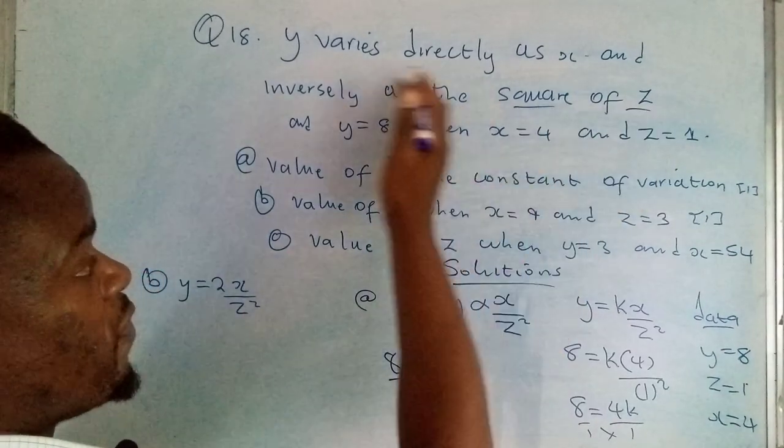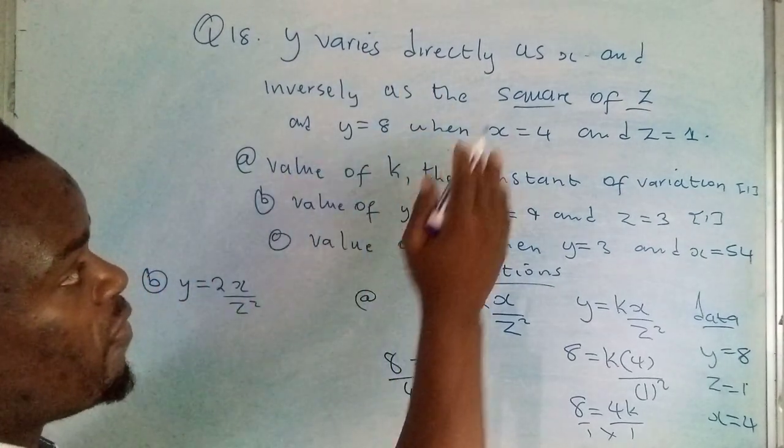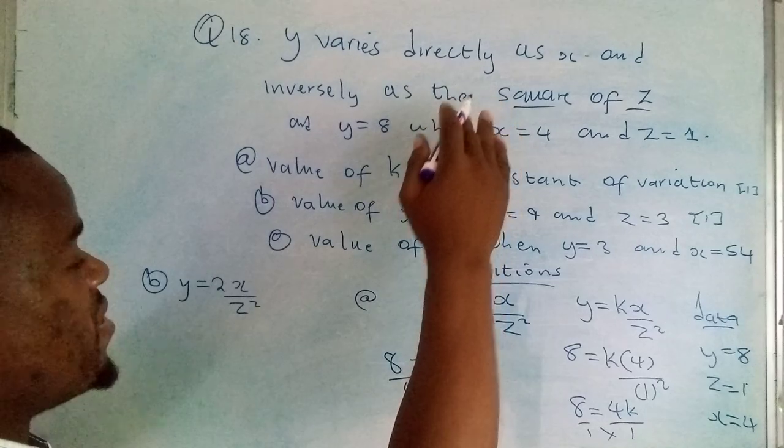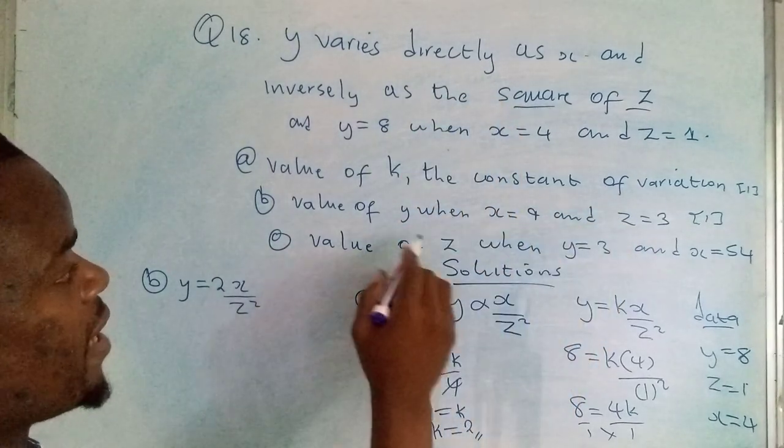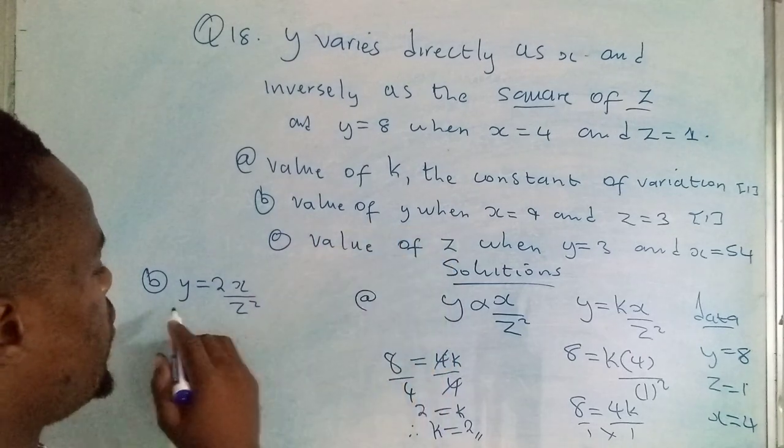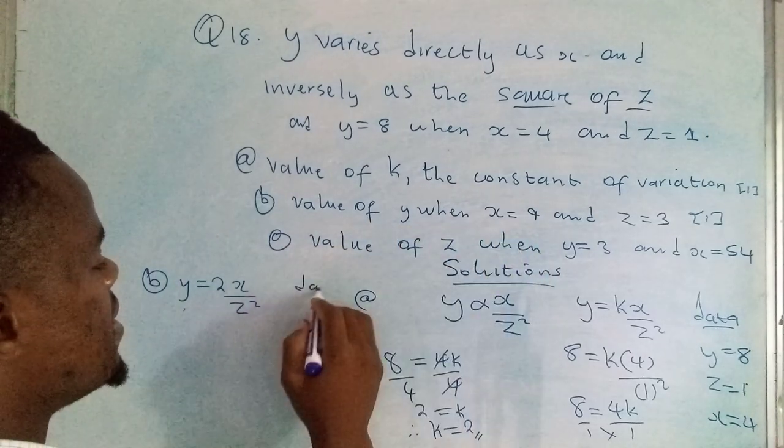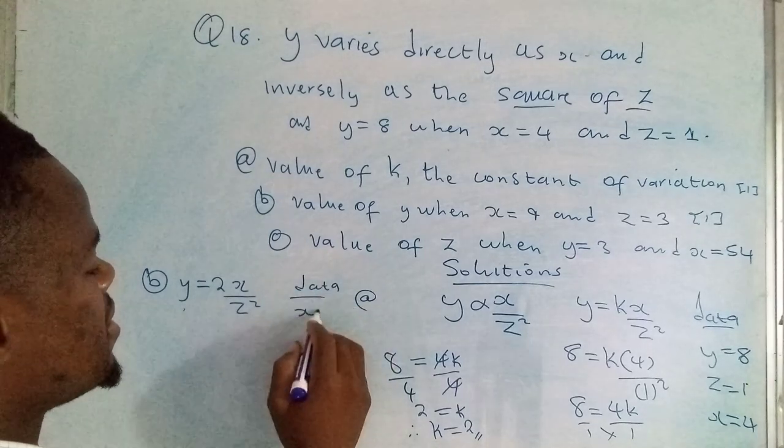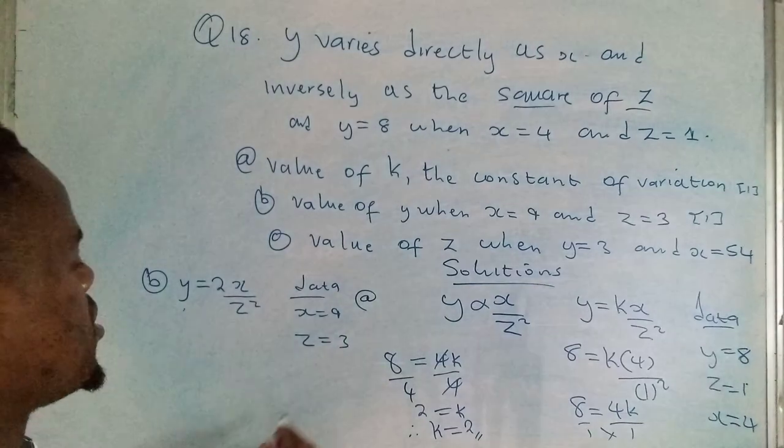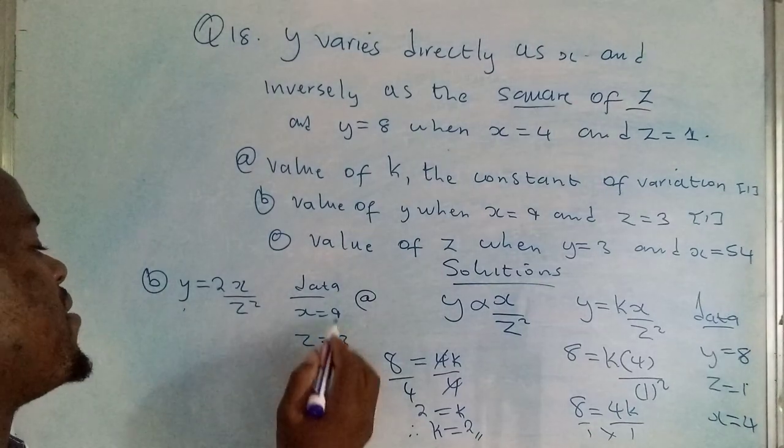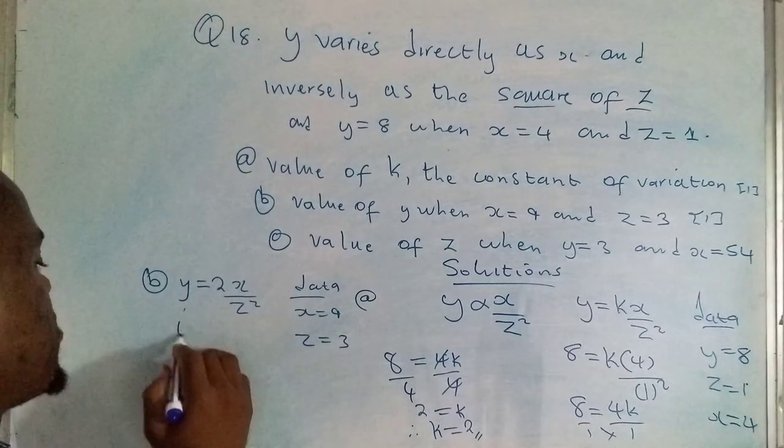We have made use of that information to determine the value of k. You no longer need to be falling back on it with these other questions. You'll be using what you will be given. Now they're saying find the value of y when x is equal to 9 and z is equal to 3.